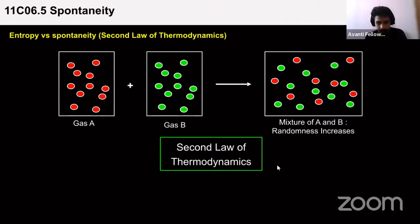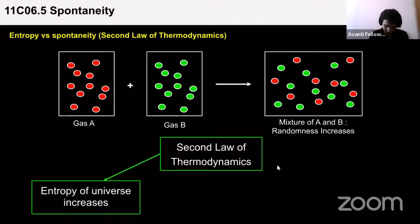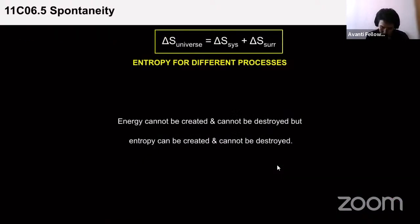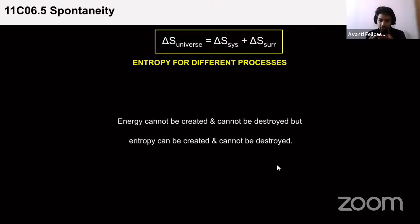Entropy of the universe is always increasing: ΔS_universe > 0. This is the second law of thermodynamics. Note: unlike energy, entropy can be created but cannot be destroyed. Energy cannot be created nor destroyed (first law), but entropy can be created — both are different terms.